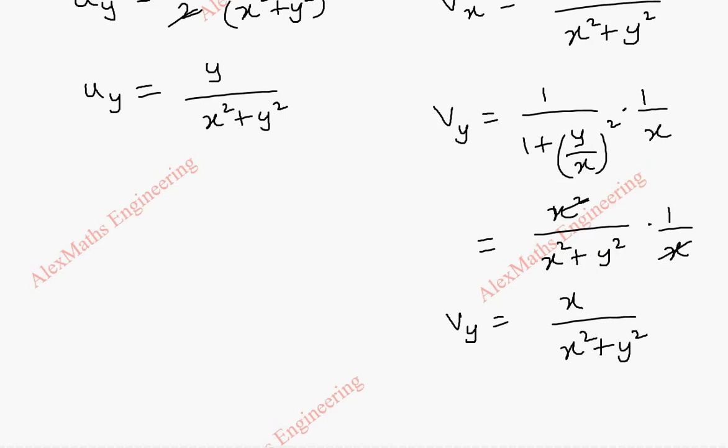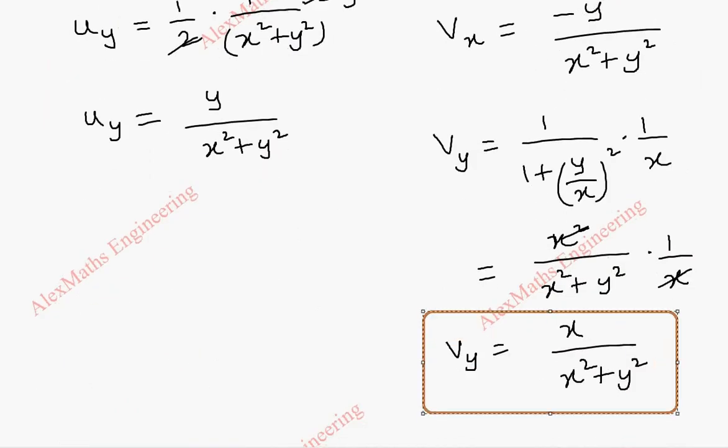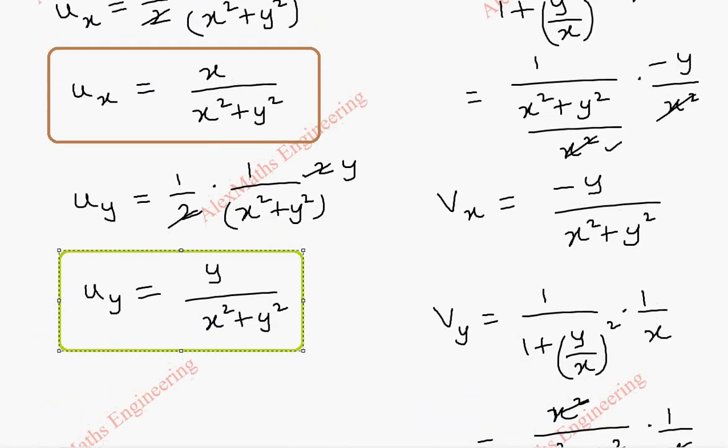Let's see the value of u_x which is x by x square plus y square and v_y is x by x square plus y square. Again, let's see u_y which is y by x square plus y square and v_x is minus y by x square plus y square. We find the same term with the opposite side.